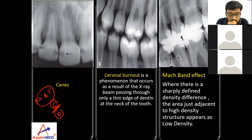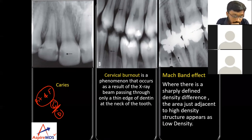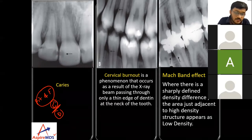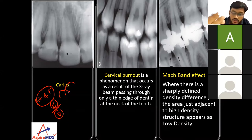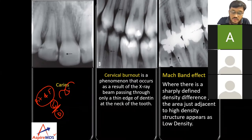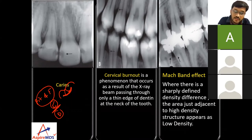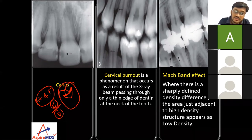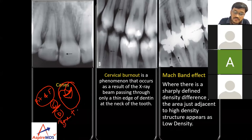In enamel it is an inverted cone, with the apex of the cone towards the pit. At the DEJ it starts spreading peripherally, and from that point it comes back again. Both are triangular in shape, and the relationship between these two triangles is base to base.